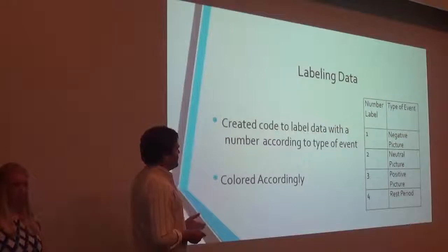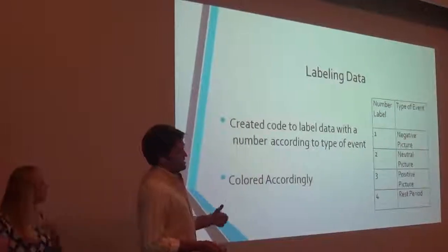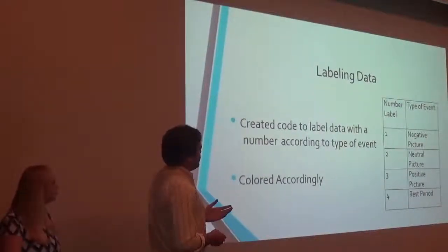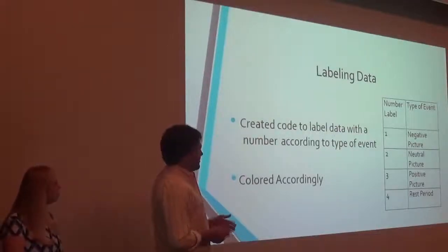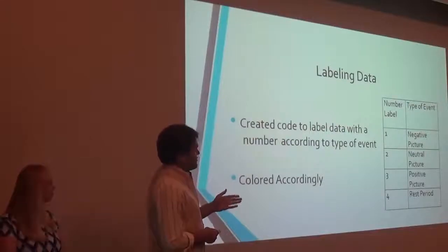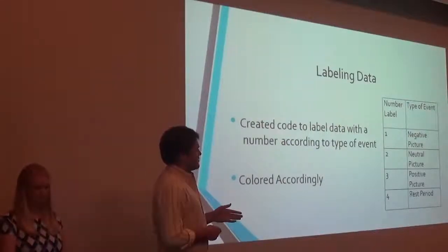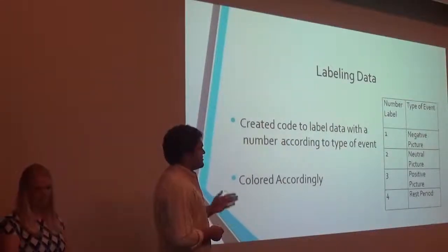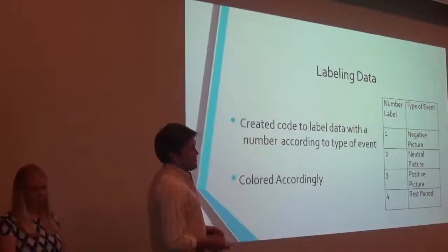So after the collection, that's when we exported the data and labeled it. We created a code that would label the data with a number according to the type of event. So we labeled it with one if it was a negative picture, two if it was neutral, three if it was positive, and four if it was the rest. And these were colored accordingly.